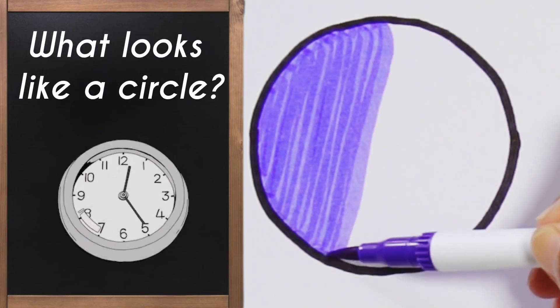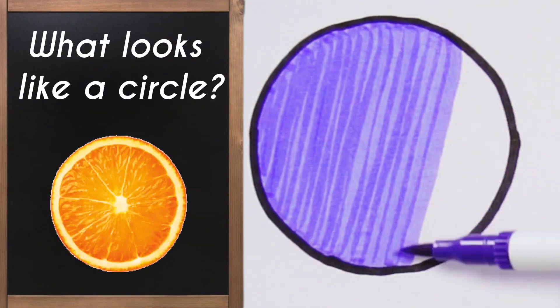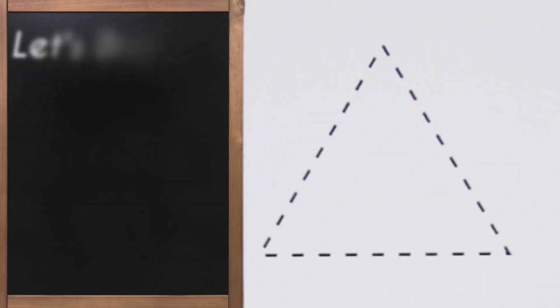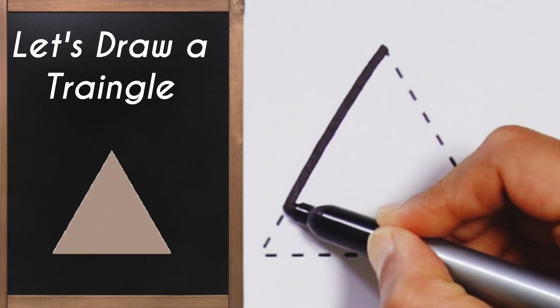A big clock, a juicy orange - they are all circles! Now let's draw the second shape, the one with three...